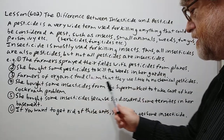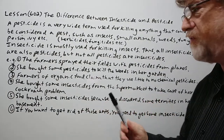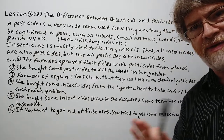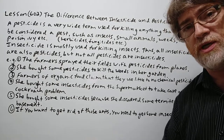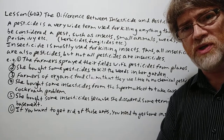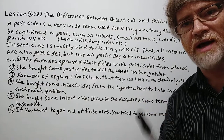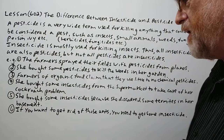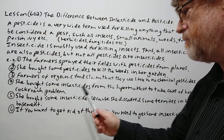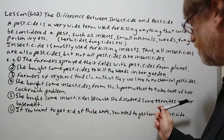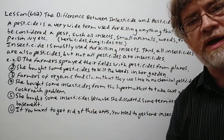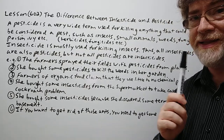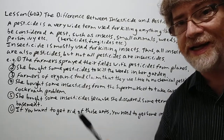Number four: She bought some insecticides from the supermarket to take care of her cockroach problem. Especially ones that aren't industrial — ones you buy from a supermarket are going to be insecticide, to kill cockroaches, ants, or any sort of little bugs. Number five: She bought some insecticides because she discovered some termites in her basement. We would tend to use the word insecticide here, but all insecticides are technically also pesticides.